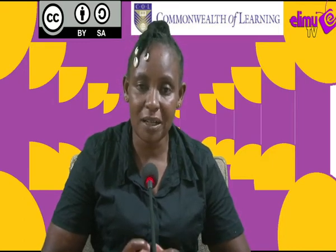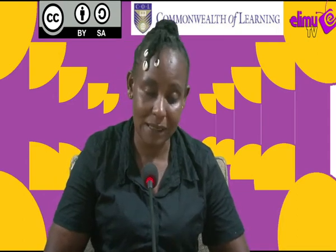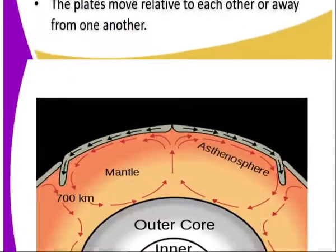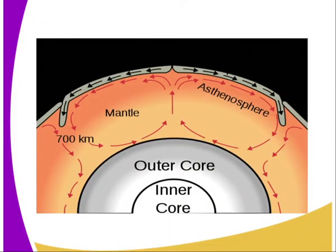These are rigid plates. Each plate is separated from another by distinct boundaries. The plates are sitting on the semi-molten layer of the upper mantle. We have a number of plates, and the plates move relatively to each other or away from one another. So we have the plates moving in different directions.